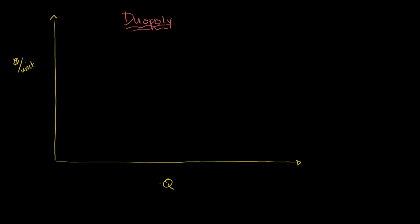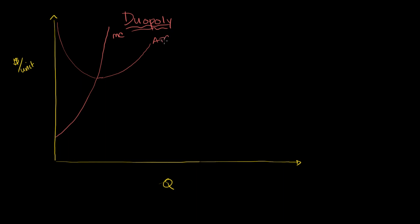Let's say both of our players in our duopoly — and this would actually apply to an oligopoly generally, though the analysis would be more difficult with more than two players — each have an identical cost structure. They both have a marginal cost curve and an average total cost curve that looks something like that. So I'll just draw it once; this is the marginal cost and average total cost for both firms.